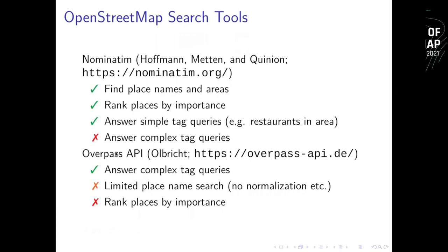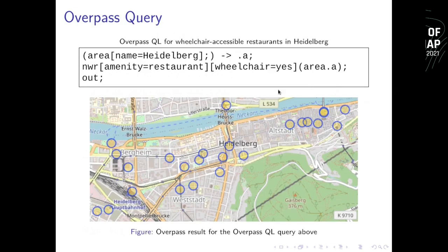Then we have the Overpass API. It is very complex and can answer all kinds of complex queries, but it is limited with respect to searching for names because place name selection only works with exact or regular expression match — we cannot normalize place names or rank them by importance. Here's an example where we select the Overpass area named Heidelberg, then select all nodes, ways, and relations with the tags amenity=restaurant and wheelchair=yes in that area, and we already get a nice result. What we want is this — not in the fairly complex query language, but in a natural language query.